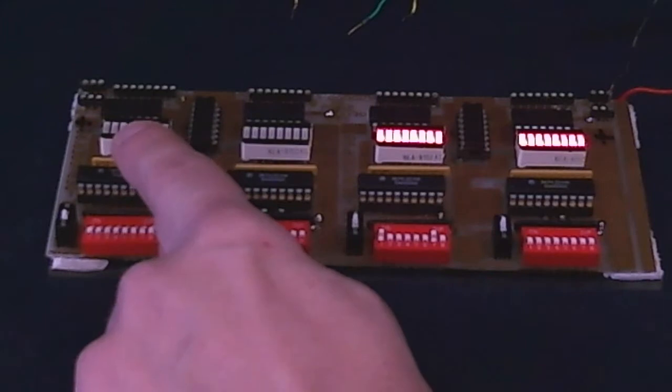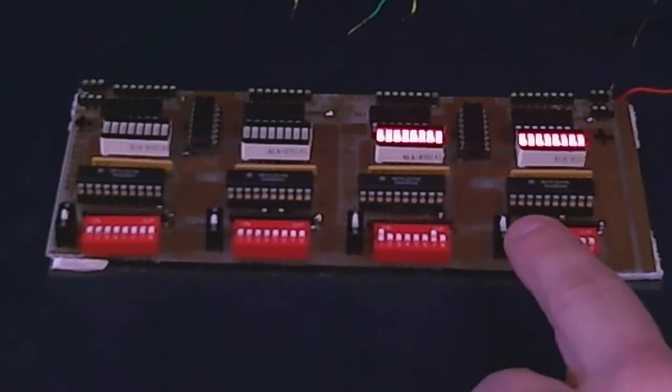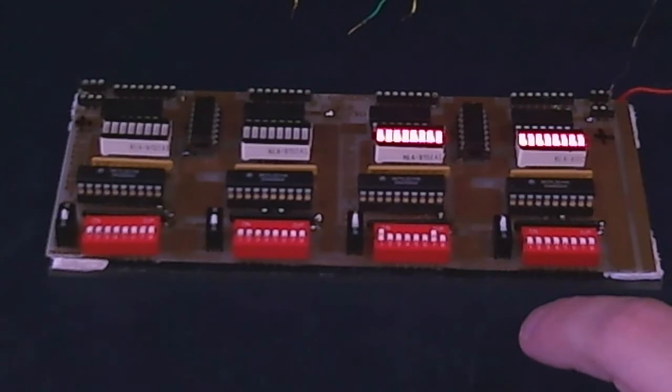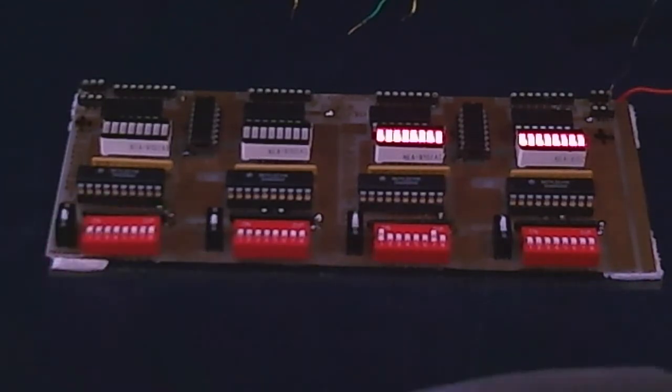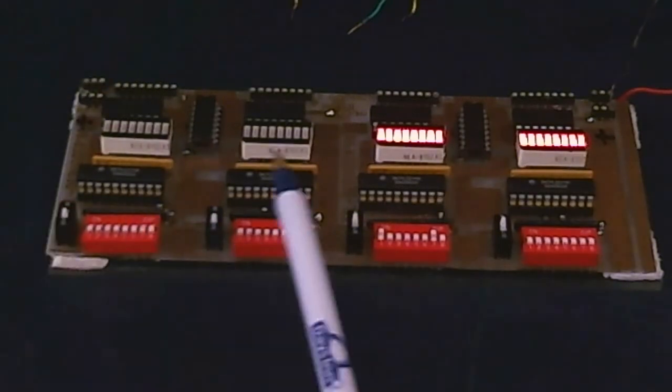We see the debugger board has four banks: one, two, three, four. Each of these banks has a set of dip switches and a set of LEDs, a bar graph LED display, and a set of holes for pins.